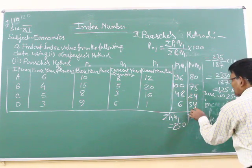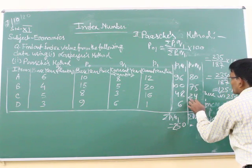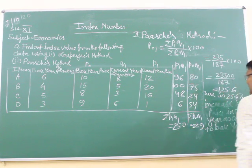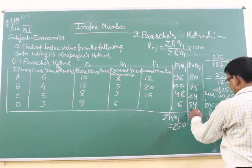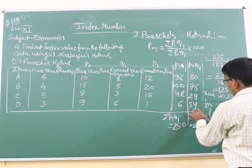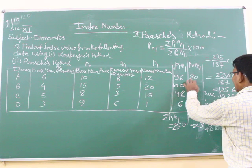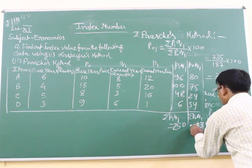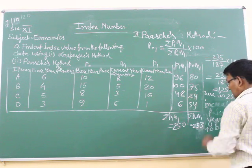P1Q1: 12 times 8 is 96, 20 times 5 is 100, 16 times 3 is 48, 3 times 2 is 6. Another one is P0Q1: 10 times 8 is 80, 15 times 5 is 75, 5 times 3 is 15, 9 times 6 is 54. We have to add them. Total P1Q1 is 250, total P0Q1 is 233.